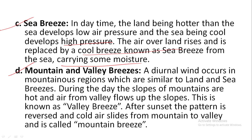Mountain and valley breezes: a diurnal wind occurs in mountainous regions, which is similar to the land and sea breezes. During the day, the slopes of mountains are hot and air from the valley flows up the slope — this is known as valley breezes. After sunset, the pattern is reversed and the cool air slides from the mountain to the valley, and is called mountain breeze.